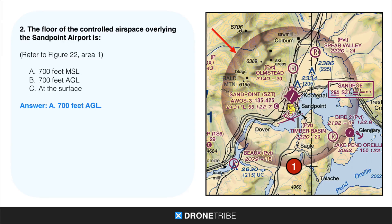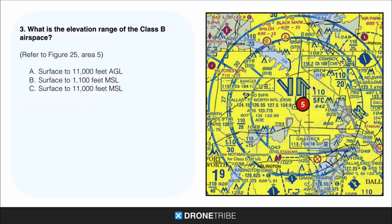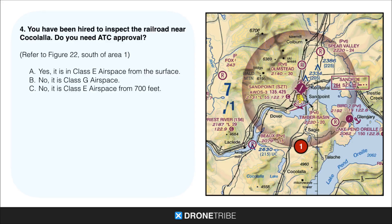We know that this Class E airspace is AGL, above ground level. For question 3, the elevation range of the Class B airspace in Area 5 of Figure 25 — we look at the sectional chart here and see that it's between the surface and 11,000 feet MSL. Remember that Class Bravo airspace is going to be indicated in MSL, above mean sea level.